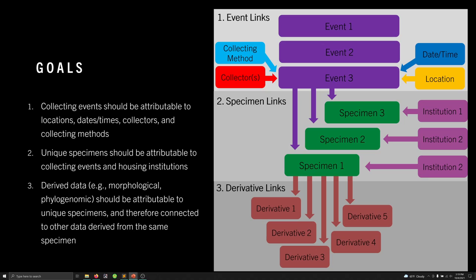Derived data — for example, morphological data, actual tissues, or phylogenomic data, so sequence data that might be on GenBank or in a publication — should also be able to be attributed to unique specimens. Through this chain of connections or links, you can connect that to institutions, to collecting events, to particular collectors, etc.